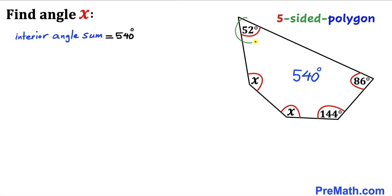Here's our next step. Let's add up all five interior angles. As you can see, let me write down: x plus x again plus 52 degrees plus 86 degrees plus 144 degrees equals 540 degrees.